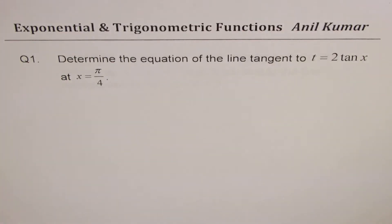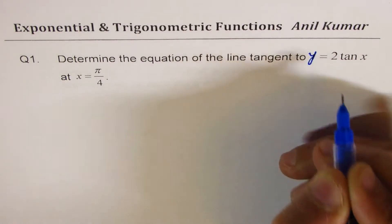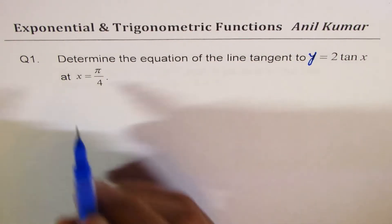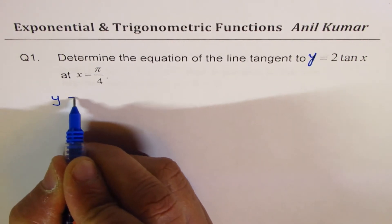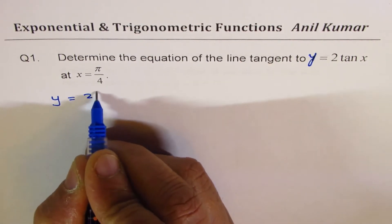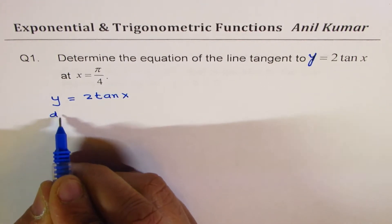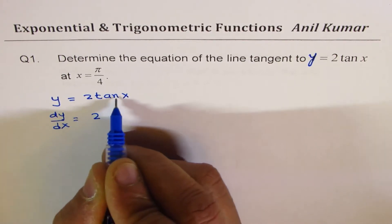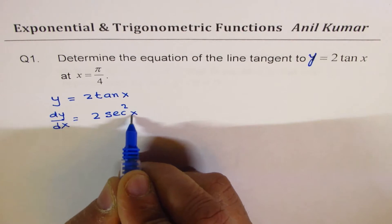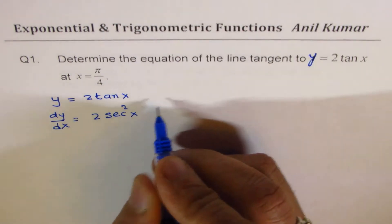The very first question is to determine the equation of the line tangent to y equals 2 tan x at x equals pi by 4. We are given the function y equals 2 tan x. So let's find the derivative: dy/dx equals 2 times the derivative of tan, which is secant squared x.